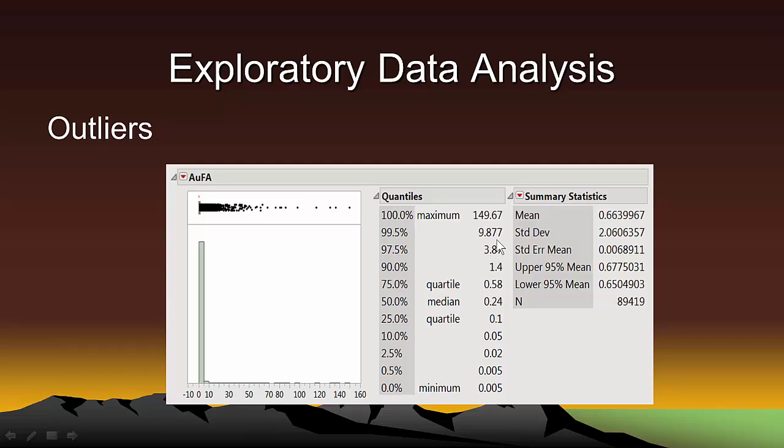But what we are really interested in is the largest sample values. For example, the largest blast hole grade is 149.67 grams per ton, while the mean is 0.664 grams per ton. The coefficient of variation can be calculated by dividing the standard deviation, 2.06, by the mean, 0.664. And the result is something a little bit larger than 3. That is a very large coefficient of variation and suggests that we have a highly skewed distribution, which is going to make our life calculating sample variograms difficult.